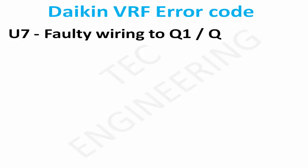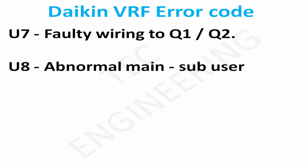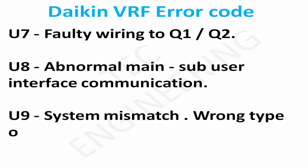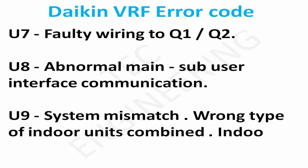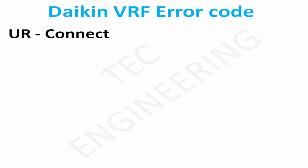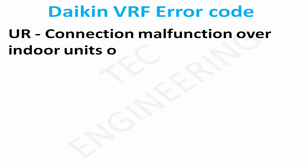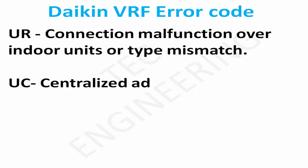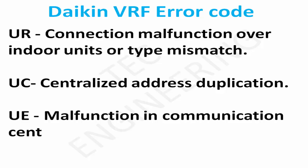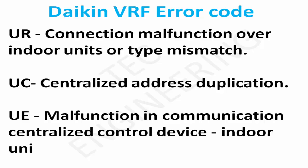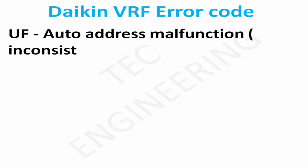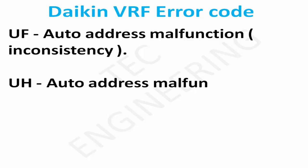U7: Faulty wiring to Q1/Q2. U8: Abnormal main sub-user interface communication. U9: System mismatch — wrong indoor units combined, indoor units malfunction, over indoor units type mismatch. UC: Centralized address duplication. UE: Malfunction in communication with centralized control device, indoor unit. UF: Auto address malfunction inconsistency.